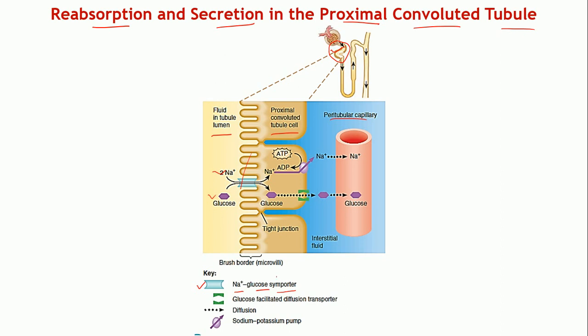The sodium-glucose symporter transports two sodium ions and simultaneously one molecule of glucose from the lumen into the cell — both moving in the same direction, hence it is a symporter. An antiporter, by contrast, moves two substances in opposite directions. This is a symporter moving both sodium and glucose in the same direction.